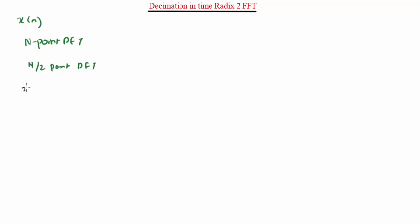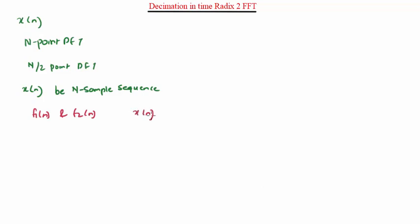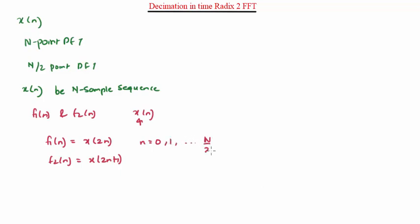For proving this, let x be an N-sample sequence. We can decimate x into 2 sequences of N/2 samples. Let the 2 sequences be f1 and f2. Let f1 consist of even-numbered samples of x and f2 consists of the odd-numbered samples, stated as f1 = x(2n) and f2 = x(2n+1), where n ranges from 0 to N/2 minus 1.